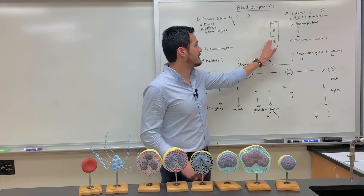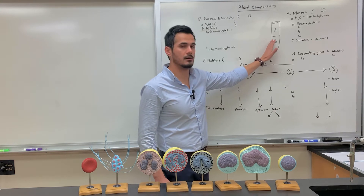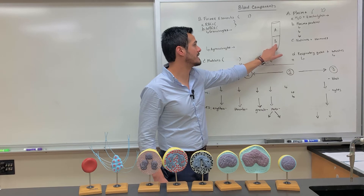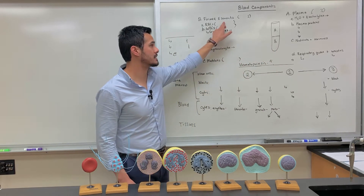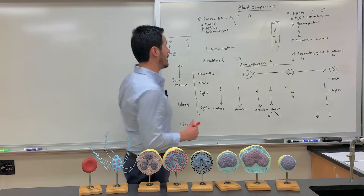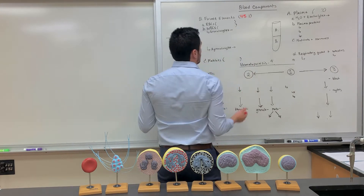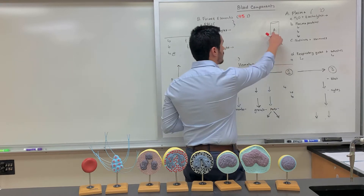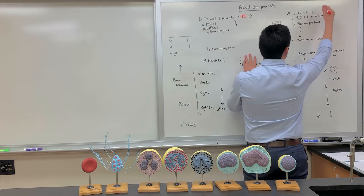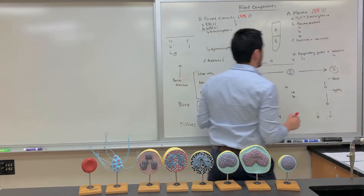The stuff found at the bottom has more mass — this is the formed elements, which makes up about 45% of what's found in the blood. The part at the top is the blood plasma, which makes up about 55% of the blood.